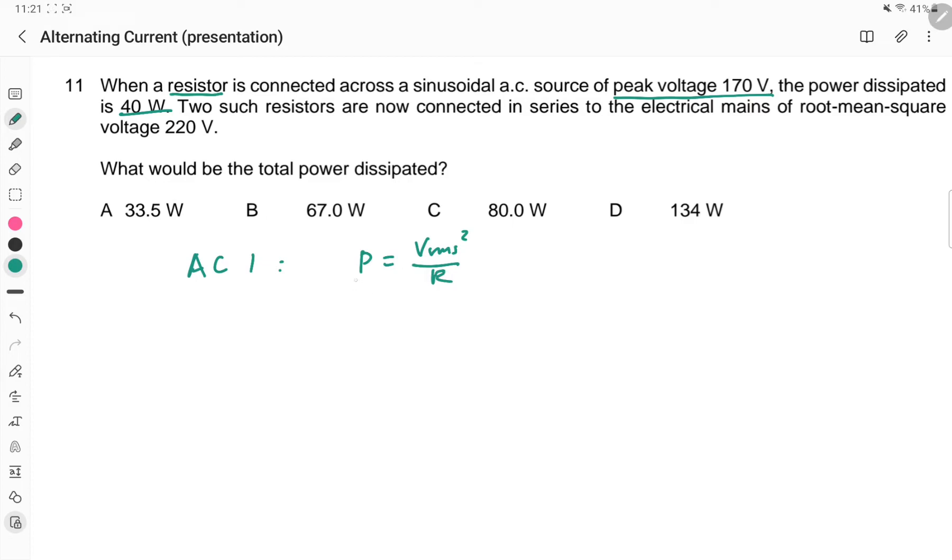So we have the power is 40W, V_RMS equals 170 divided by root 2, squared, divided by R. So I can make R the subject: R will be equals to 170 squared divided by 80. So this is equation 1.